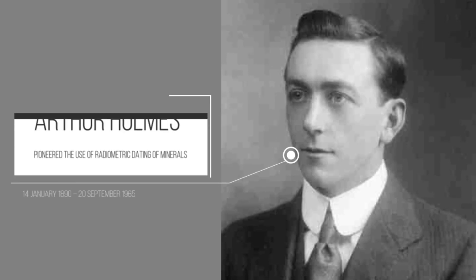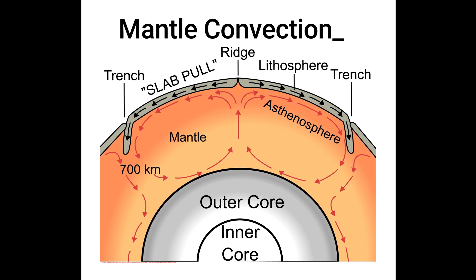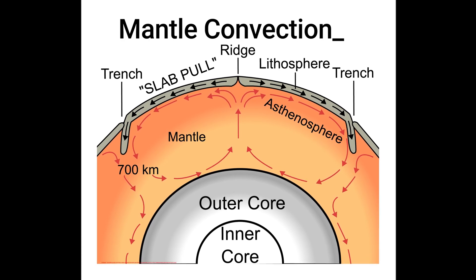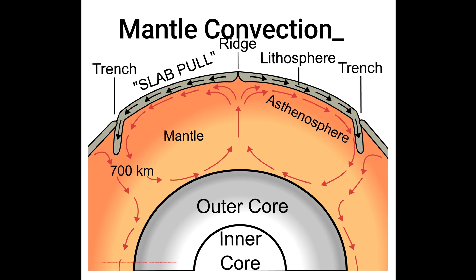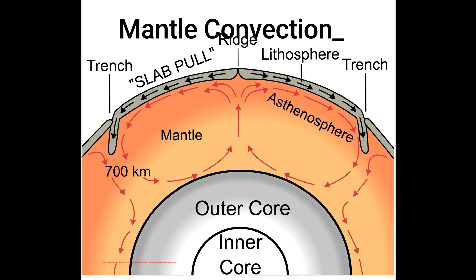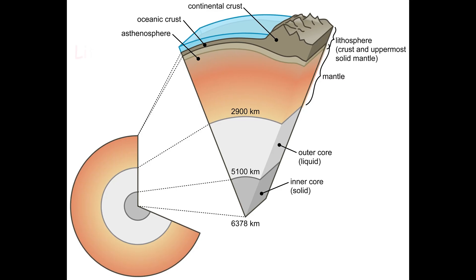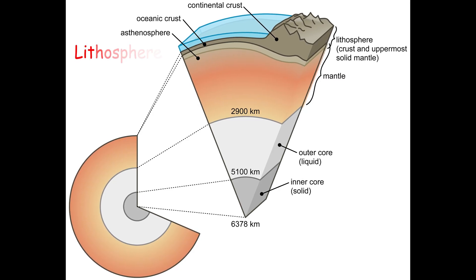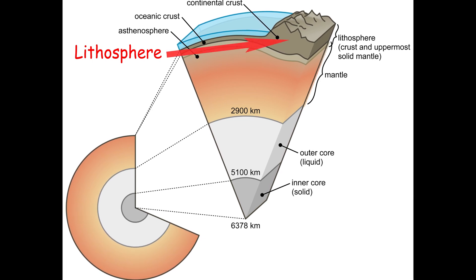Arthur Holmes later established mantle convection. The theory of plate tectonics, which explains how continents move by riding on plates of the earth's lithosphere, has subsequently supplanted the concept of continental drift. The lithosphere is the planet's hard outermost shell and contains tectonic plates.